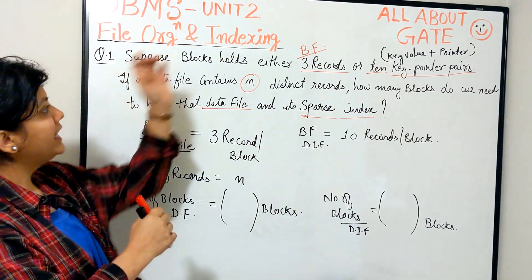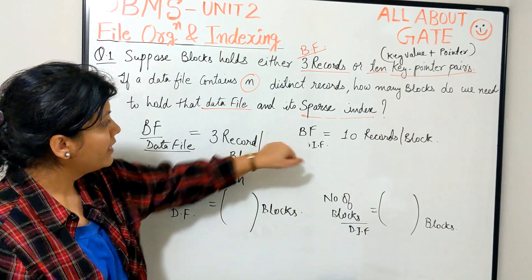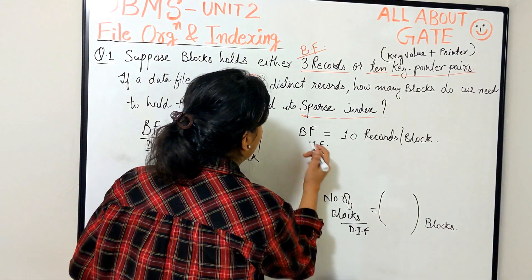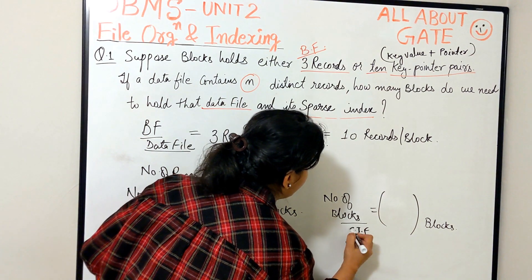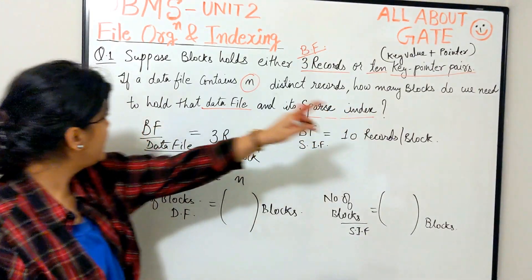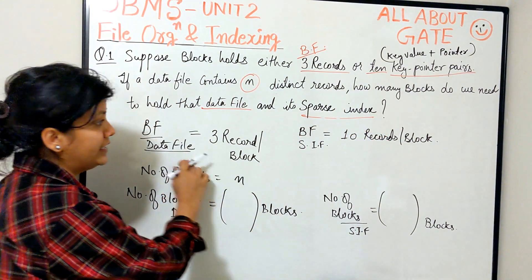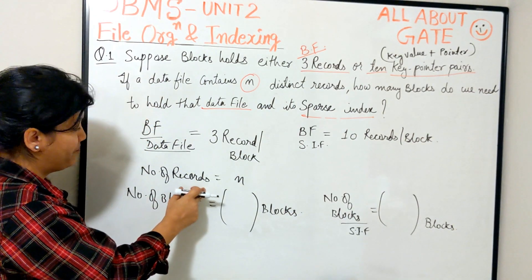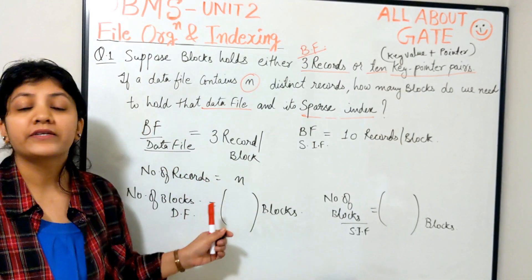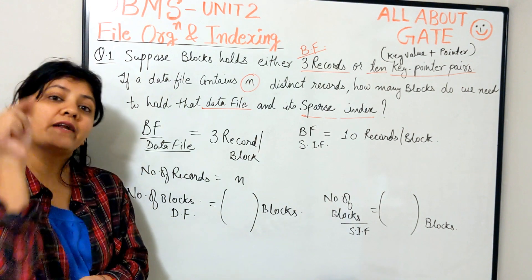Now I've made a small change to this question — everything else is the same: similar blocking factor for the data file and for the index file. The only change is that instead of a dense index file, you now have a sparse index file. If a data file contains N distinct records, how many blocks do we need to hold the data file and its sparse index? I'm leaving this question for you to solve and write your answer in the comments.